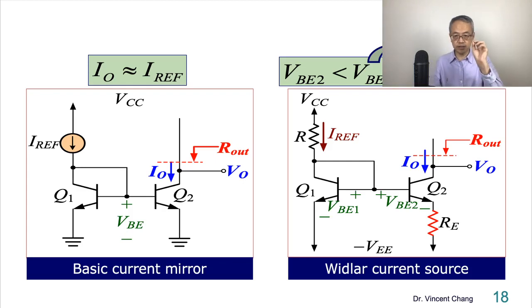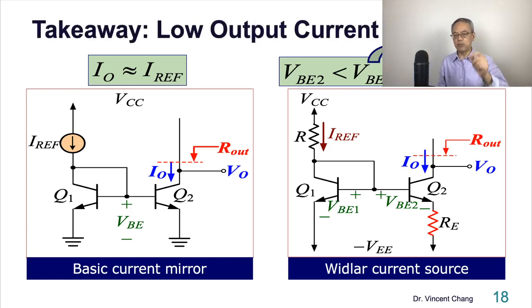So it's suitable for, put down this on your note, takeaway. Low output current bias. Widlar current mirror is specially for the application of low power or low bias current design.